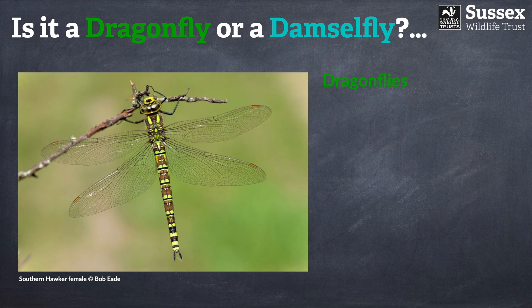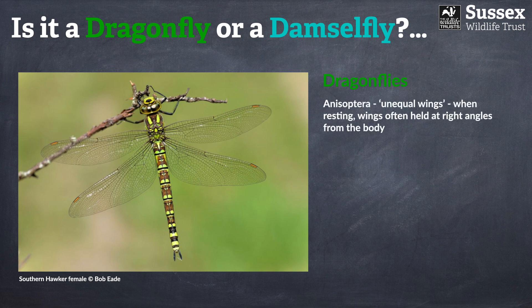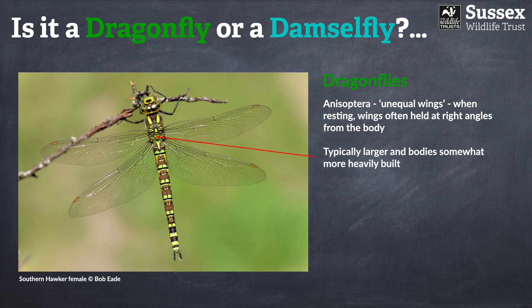Fortunately, they both have some key features that will enable you to do this. In the case of dragonflies, as mentioned in part one, they belong to the Anisoptera, or 'unequal wings.' When resting, they often tend to hold the wings out at right angles from the body. If you look at the hind wing — the lower wing — you can see that it's actually shorter but wider than the front wing. Their bodies as a whole are much more heavily built and larger than damselflies, so they tend to have a rather robust, somewhat stocky appearance.